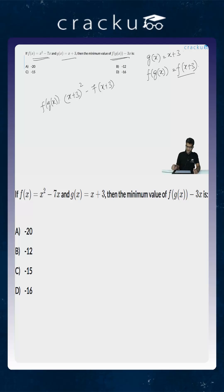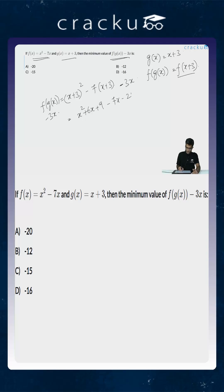So what is f of g of x minus 3x? This will be x plus 3 whole squared minus 7 times x plus 3 minus 3x. Expanding this: x squared plus 6x plus 9 minus 7x minus 21 minus 3x, which gives us x squared minus 4x minus 12.